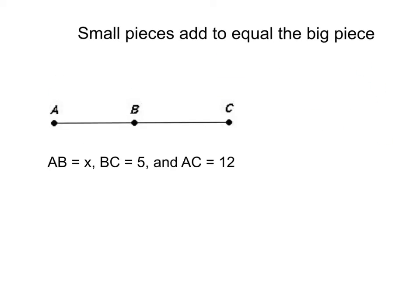Here's how we might set up a problem using information we know. Say we knew that AB equaled x. I can label that AB, the length of AB is equal to x. If I knew that BC was equal to 5, that would be the length of BC is equal to 5. And we're given that AC, the big length, was equal to 12.